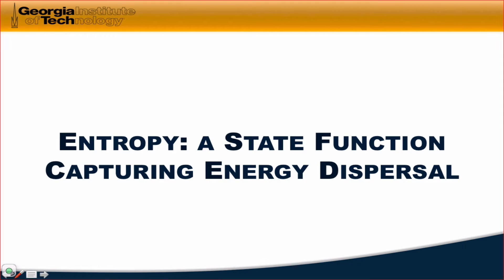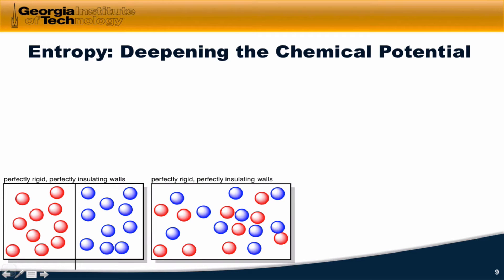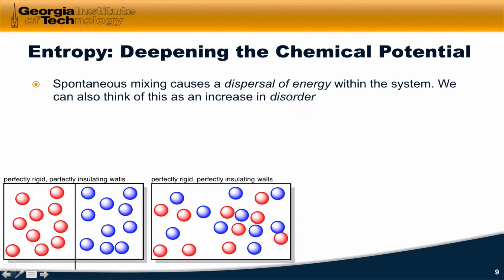And the state function that does the job is one that's called entropy, which is denoted with the letter S. In this video, we'll look at the classical definition of entropy, talk about a conceptual idea for what entropy represents, and do a simple calculation for an entropy change for a process we've seen already. So let's dive into entropy, which gives us a deeper appreciation for the nature of the chemical potential.